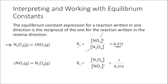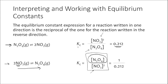If I were to flip this chemical reaction around and write it in the reverse direction — now defining 2NO2 being converted to N2O4 as the forward direction — my product is now N2O4, which goes on top of the equilibrium expression, and NO2 (the reactant) goes on the bottom. This equilibrium constant expression is flipped from before. Taking that fraction and flipping it upside down means we're taking the reciprocal, so the value of the equilibrium constant for the reverse reaction equals 1 divided by 0.212.